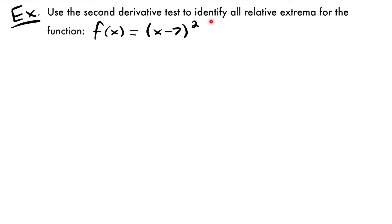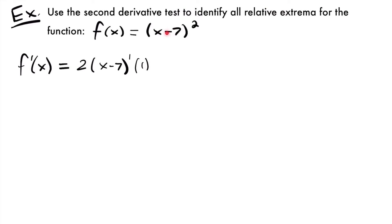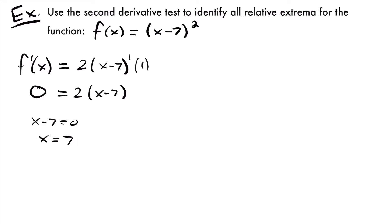Let's start by taking the first derivative and setting it equal to zero. f'(x) is going to equal the derivative of this function. The easiest way is to use the chain rule. We take the derivative of the outside function first: 2 times (x-7), subtracting 1 from our exponent leaves an exponent of 1. Then multiply by the derivative of the inside function, which is just 1. So our simplified first derivative is 2(x-7). Setting this equal to zero, x-7 = 0 gives us x = 7 as our critical value — the point where the slope equals zero.